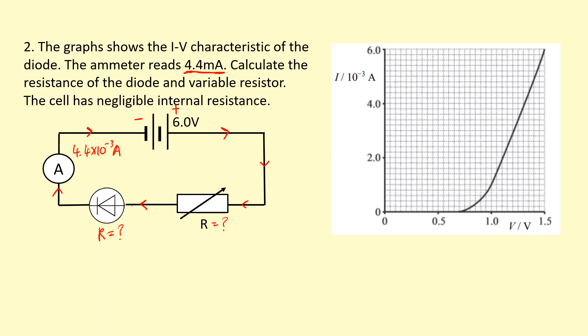So we need to find the potential difference across the diode and the potential difference across the variable resistor. And we've been given this graph here, so it makes sense to read information from the graph. And that graph is for the diode, so we can figure out the voltage across the diode by using the corresponding current. So in this case, 4.4 milliamps. So this point here is 5 milliamps. So 4.4 is going to be this point here, because each square is going to be worth 0.2. So if I read along that, and then read down.